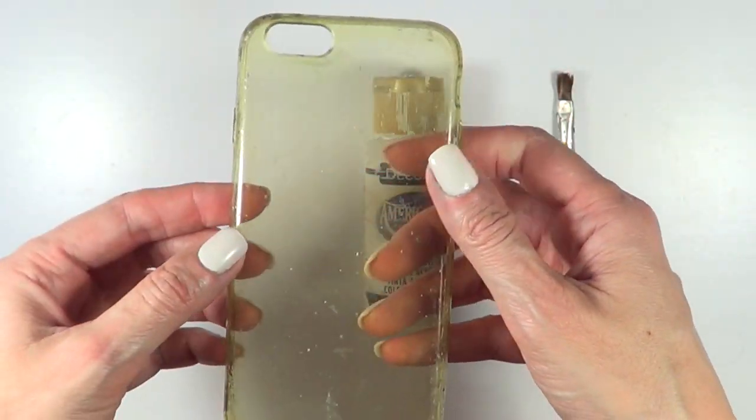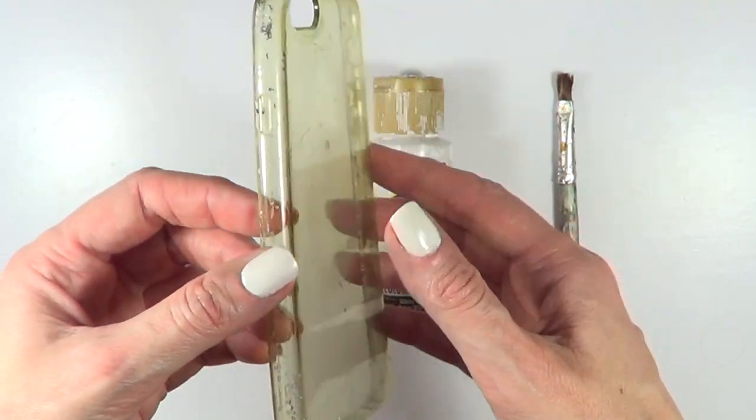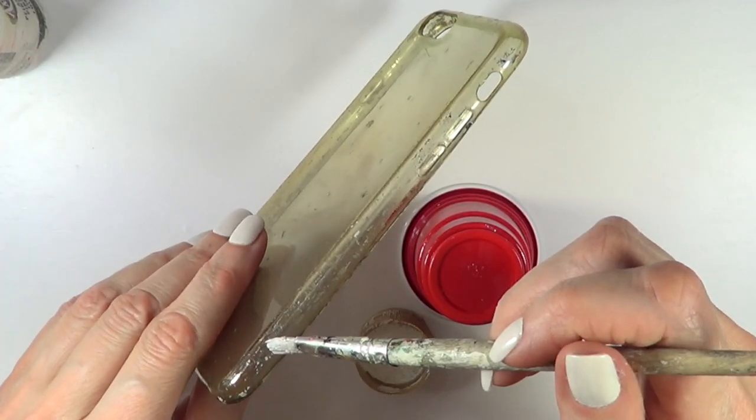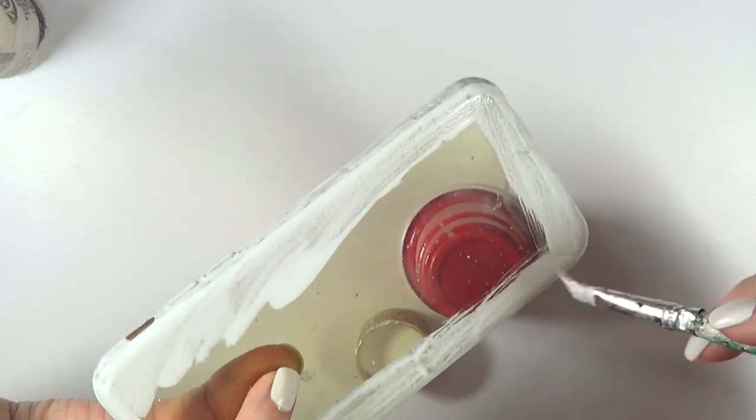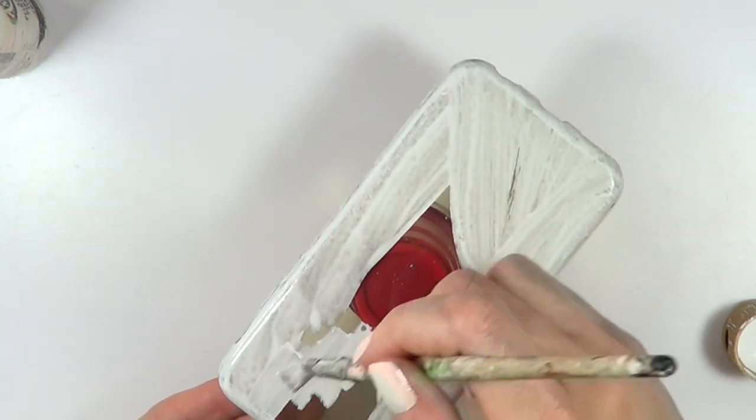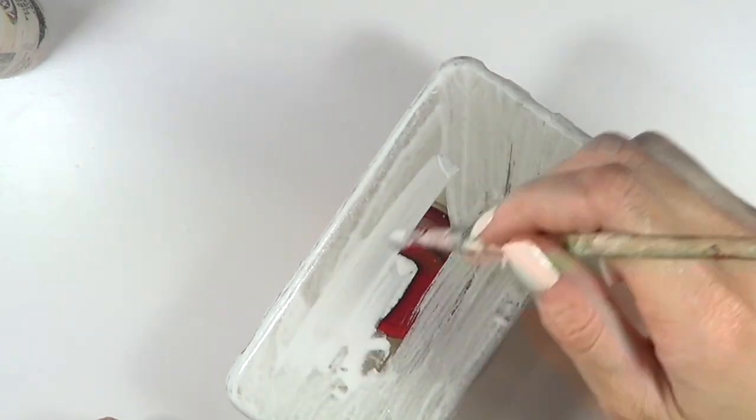It has some leftover paint all over the place. It doesn't really matter because we're going to be painting this anyways. But if you want to start off with a white phone case, go ahead and do that. I'm just going to be painting this using my watercolor paint and my brush until everything is covered and I can't see through it anymore.